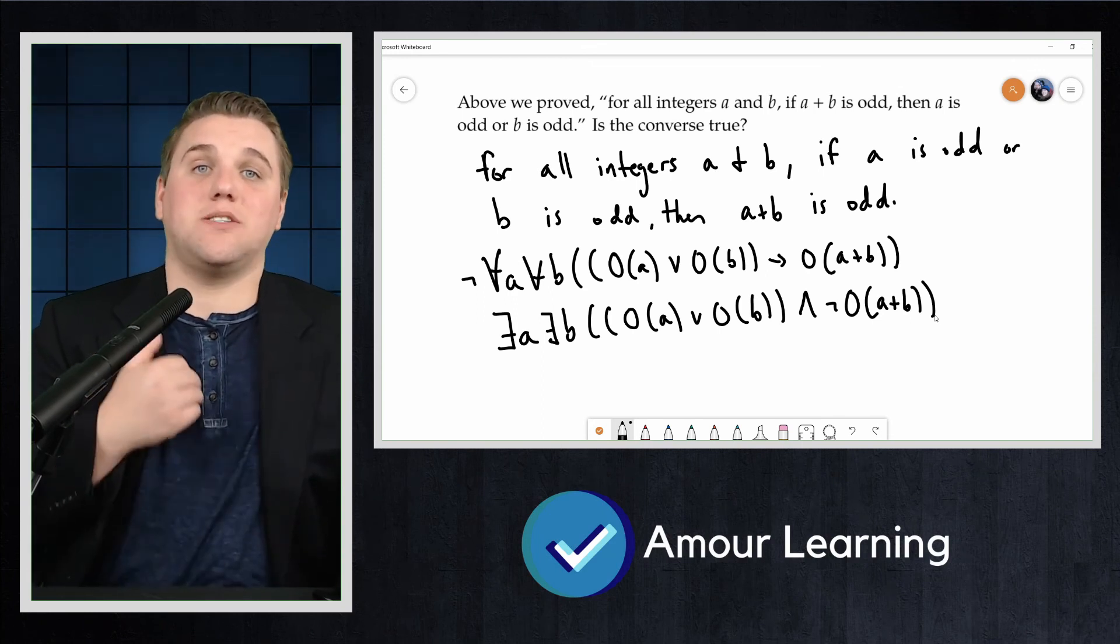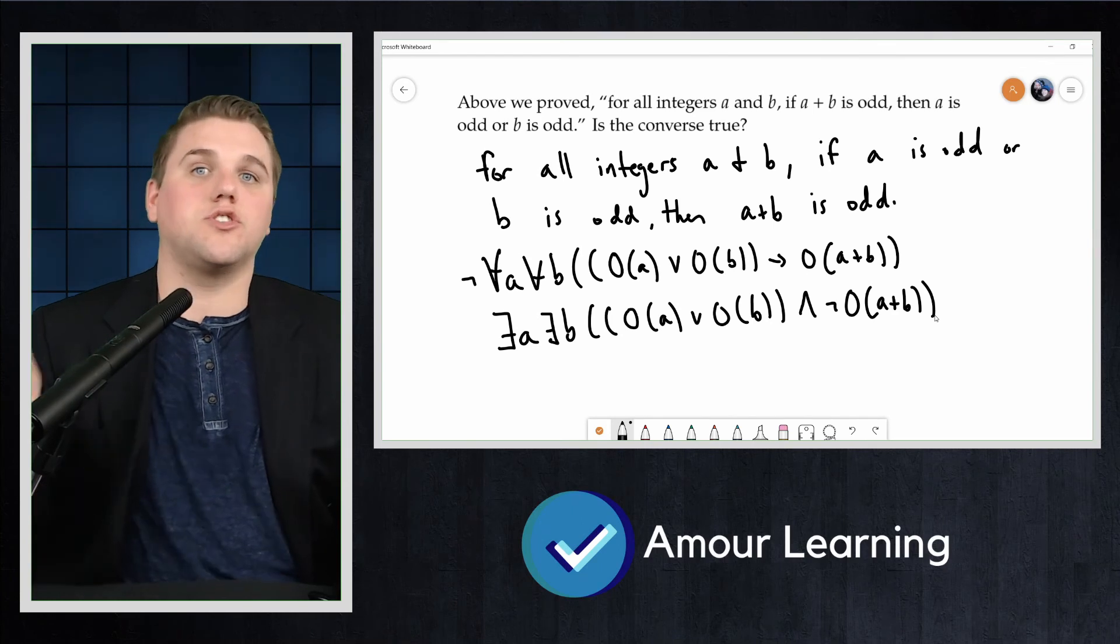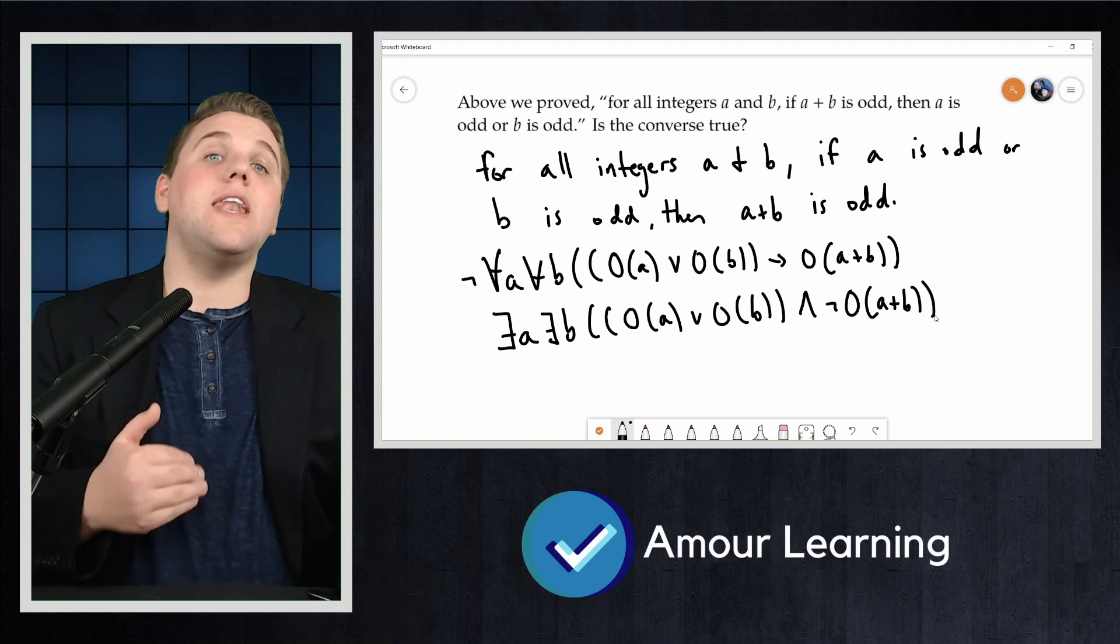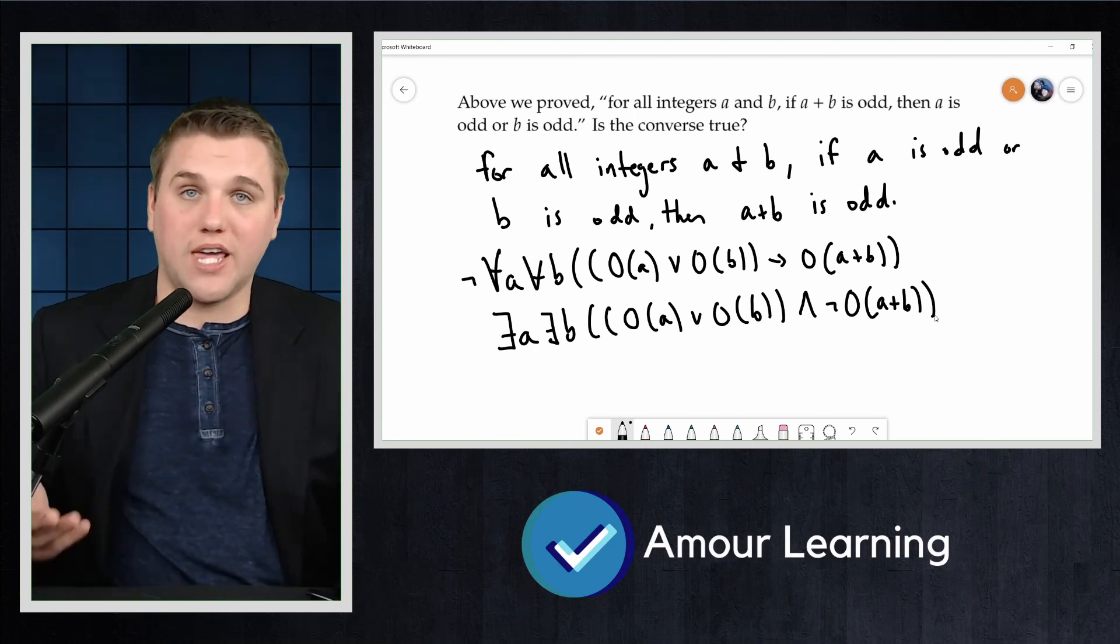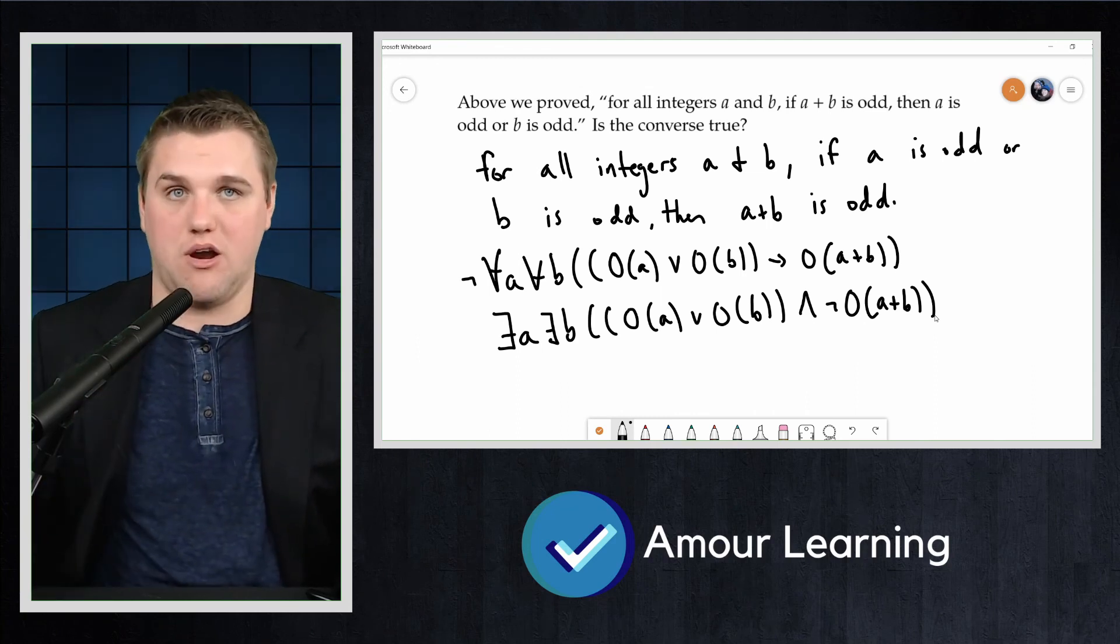As the negation passed by the quantifiers, they changed from for all or universal to there exists, which is existential. We then needed to take the negation of an implication, which is equivalent to asserting the if part and not the then part.